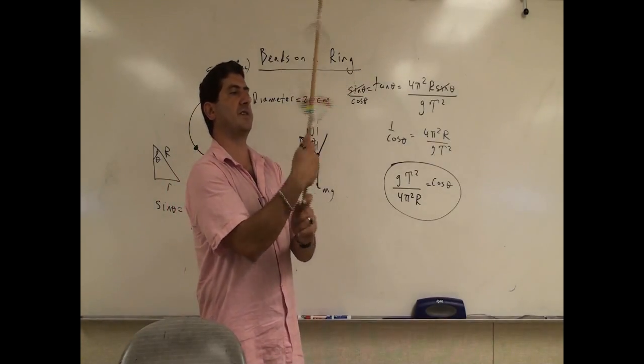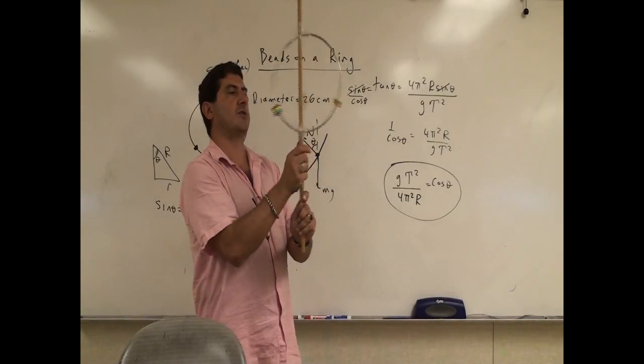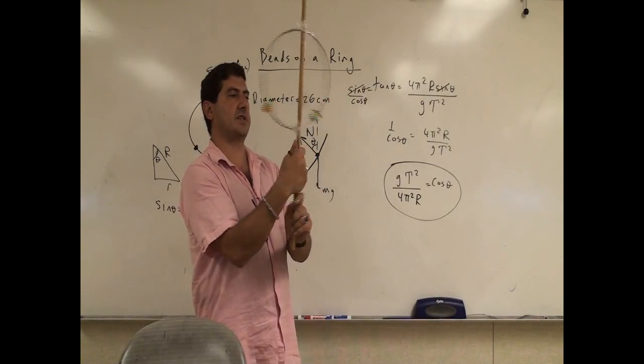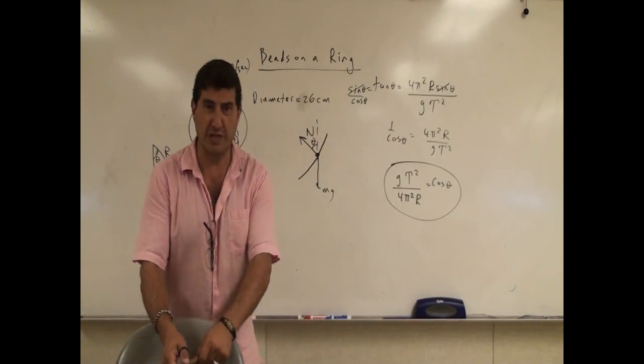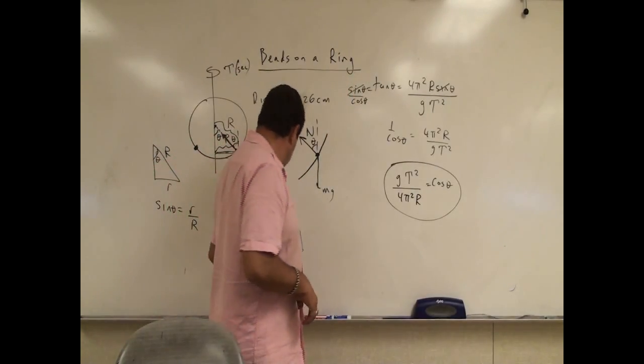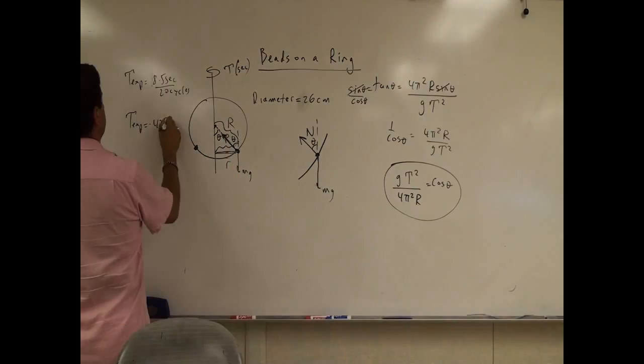It came out about 9 seconds. 1, 2, 3, 4, 5, 6, 7, 8, 9, 10, 11, 12, 13, 14, 15, 16, 17, 18, 19, 20, okay? So 8.5 seconds. So 20 cycles is taking 8.5 seconds.